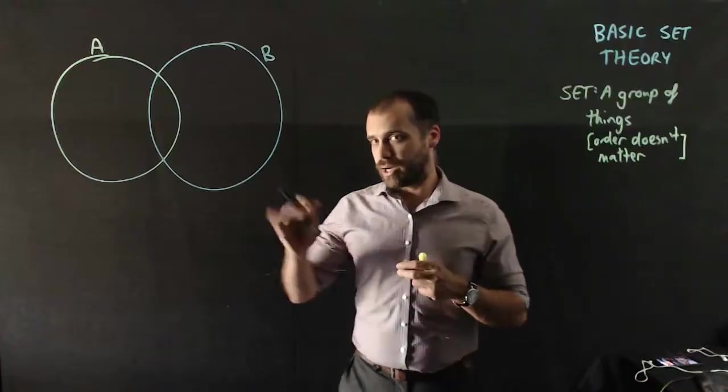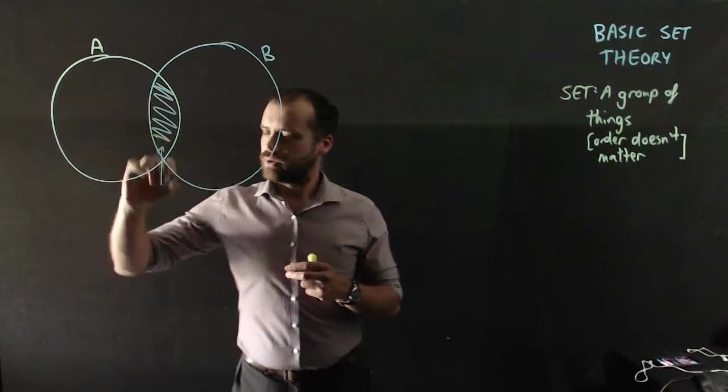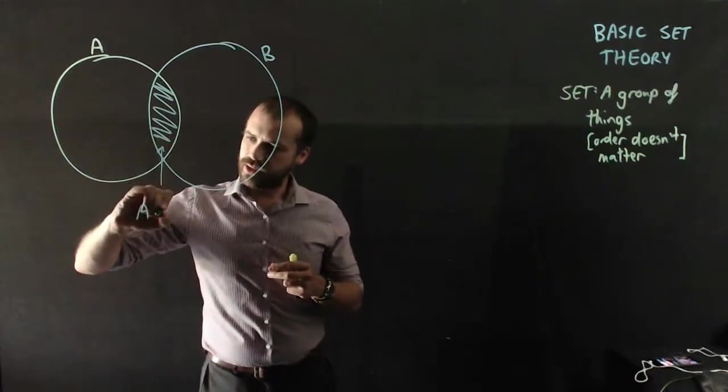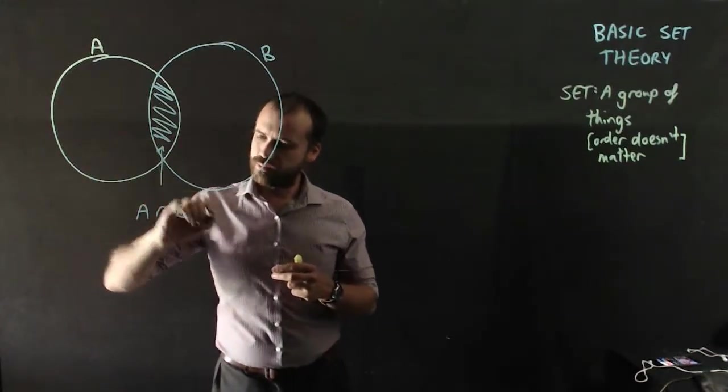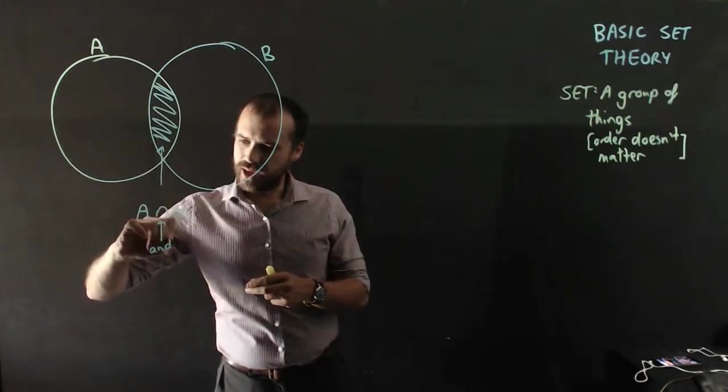The two really important parts of this set theory that we're going to have is this bit in the middle, which is A intersection B. The intersection is kind of like the word 'and'.